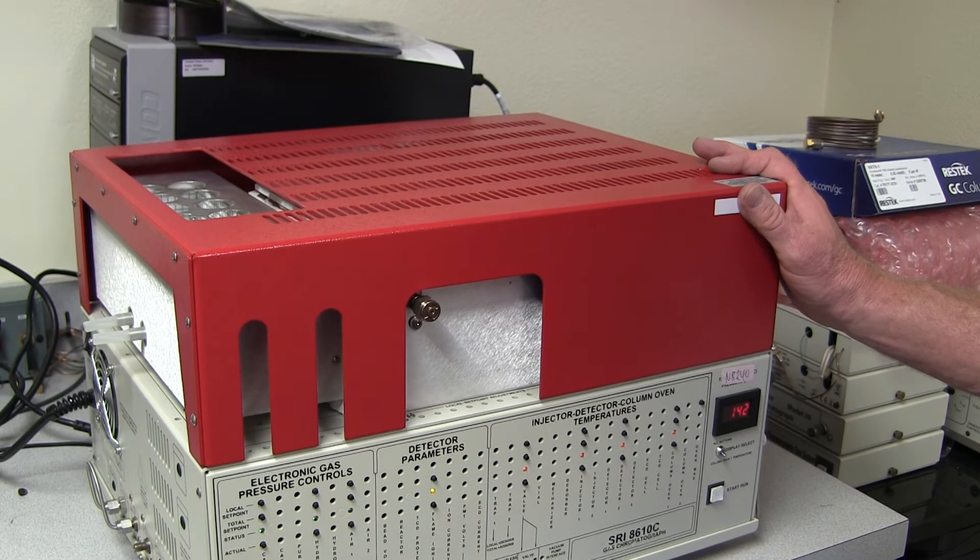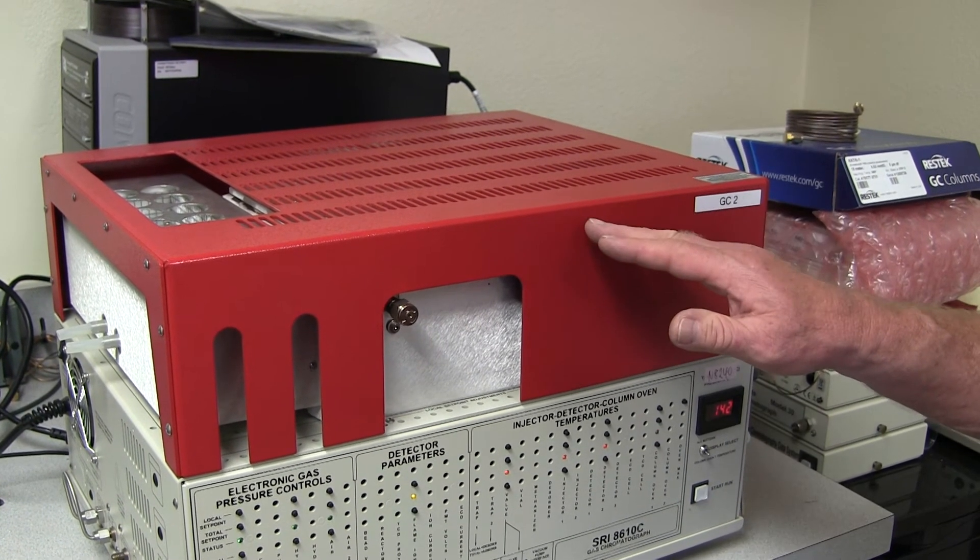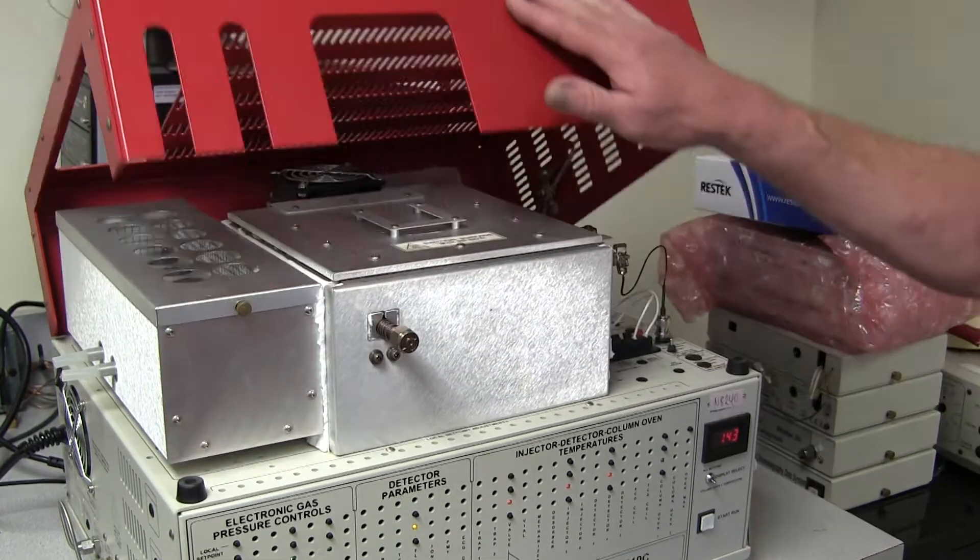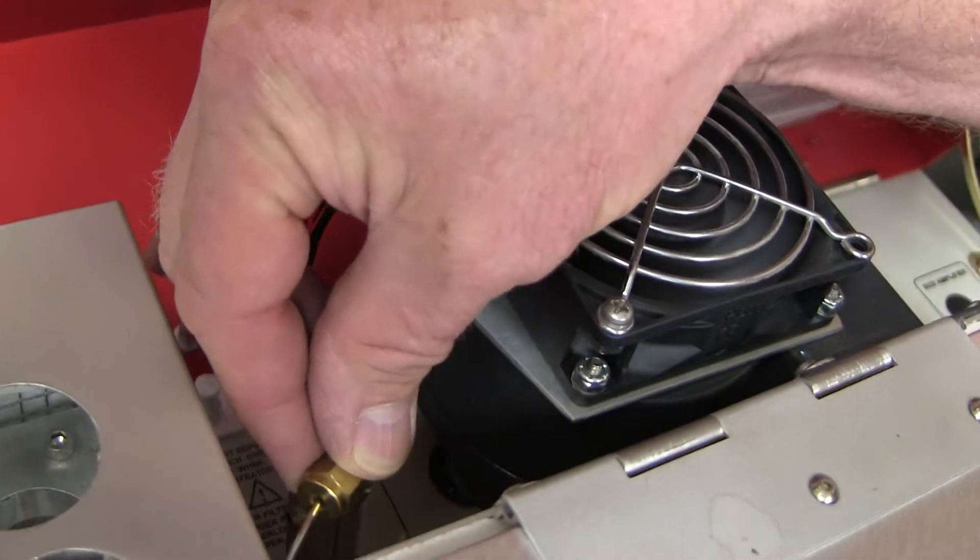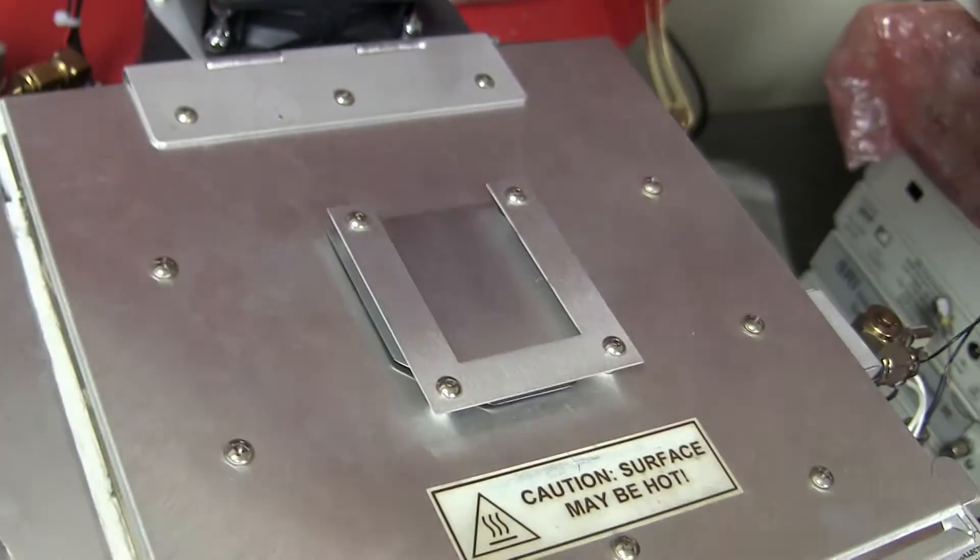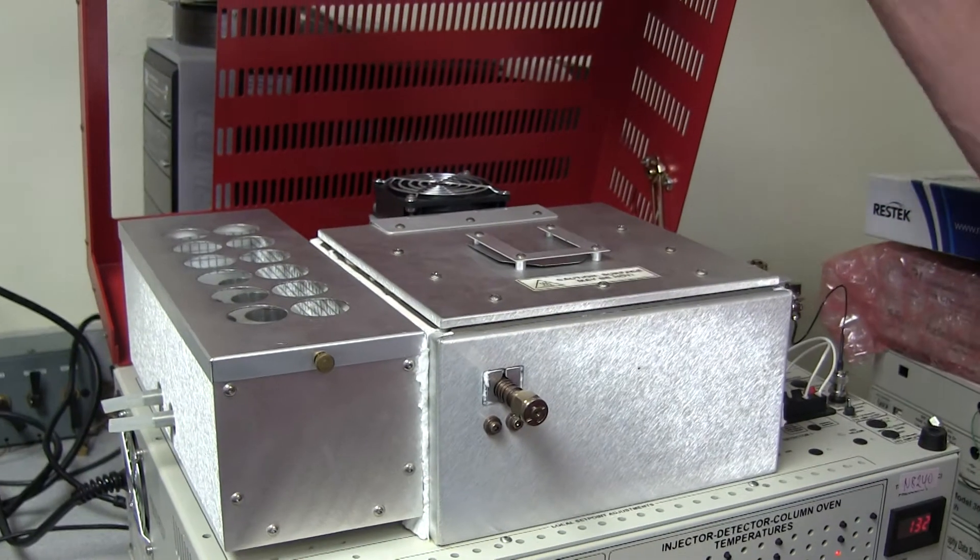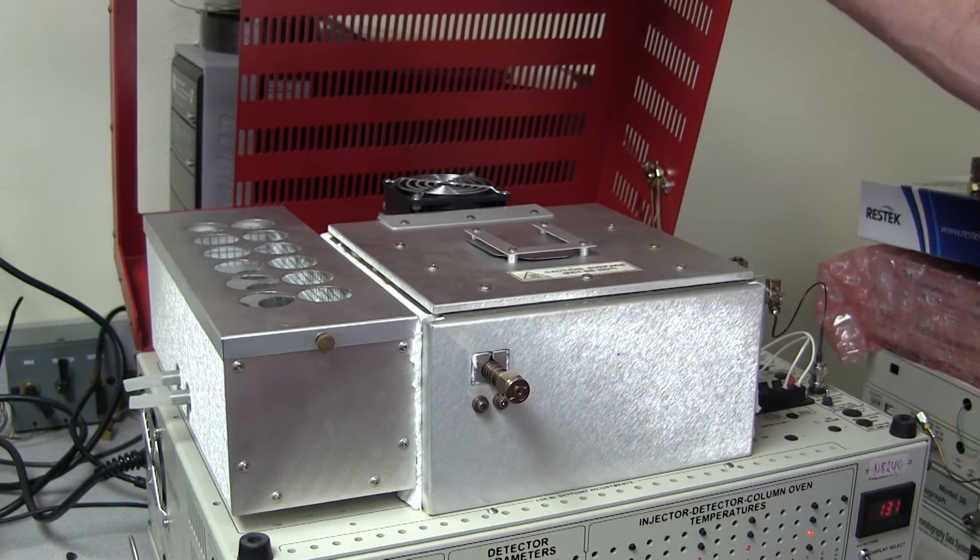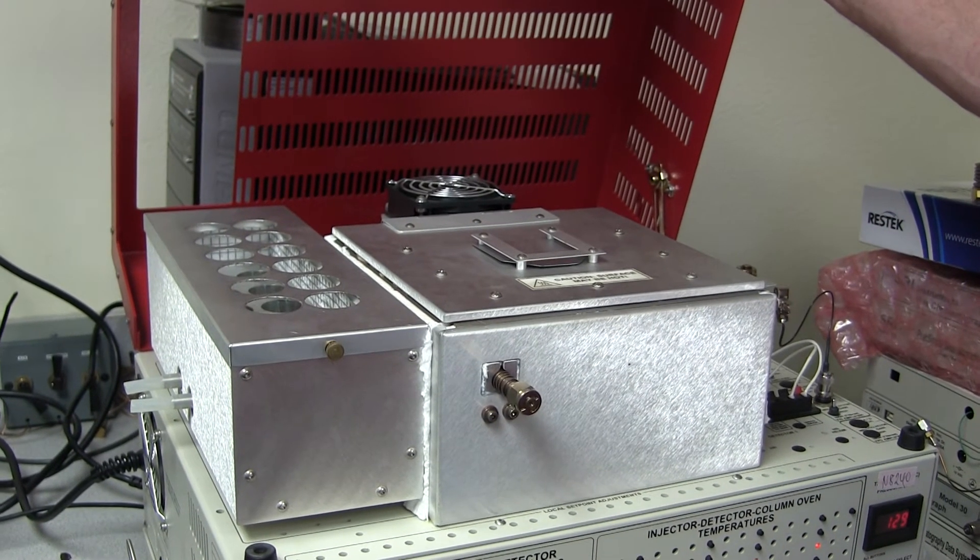One definition of baking out is to clean out the polishing filter on the GC. SRI builds a little filter into the GC, which is located immediately behind and to the left of the column oven. This filter catches impurities in the carrier gas as it flows through. It also catches little traces of machining oils and debris that's left over from putting the GC together in the first place.